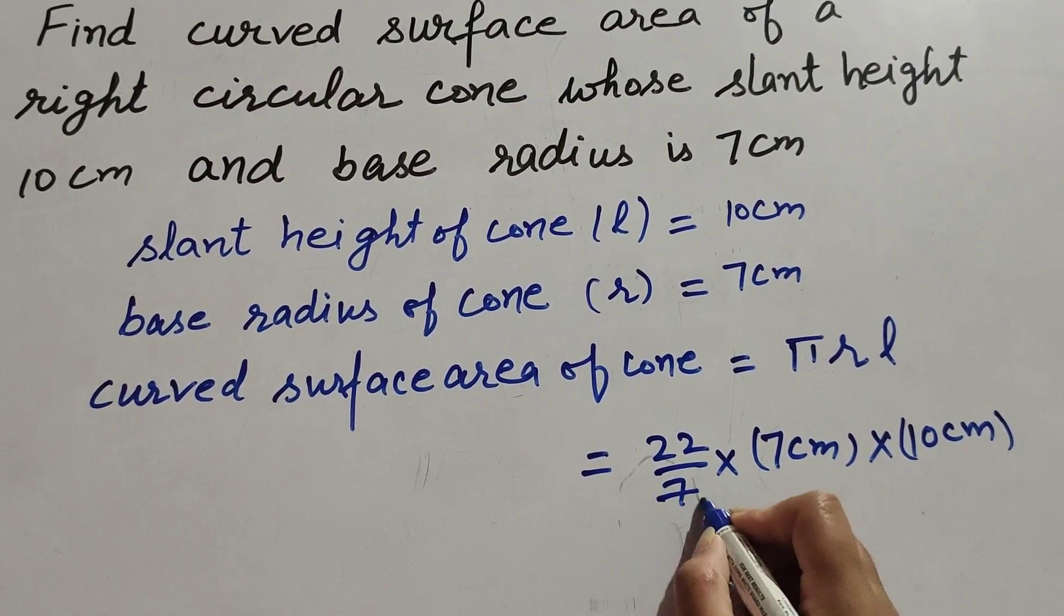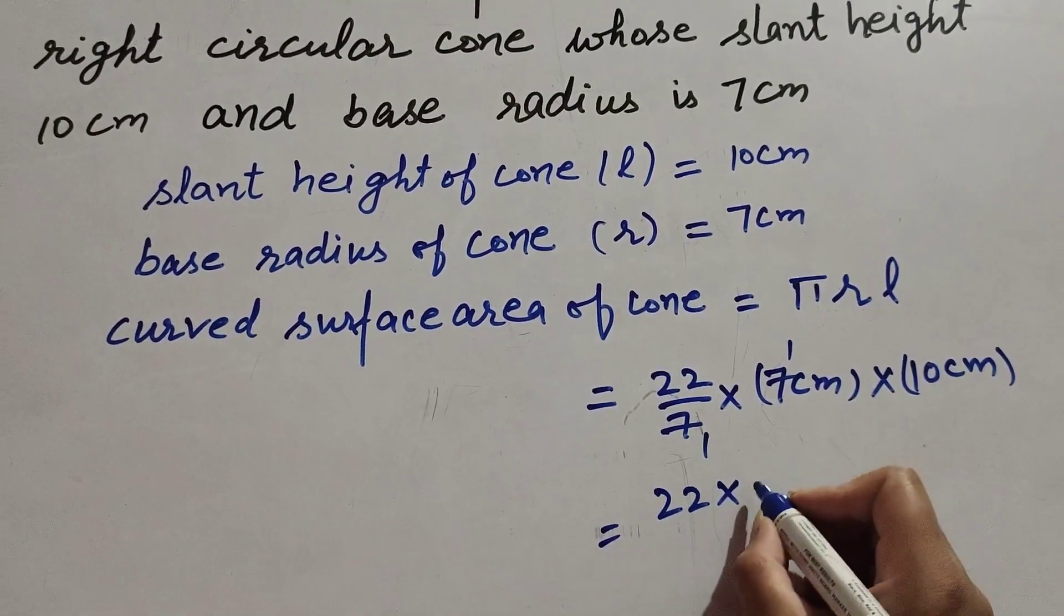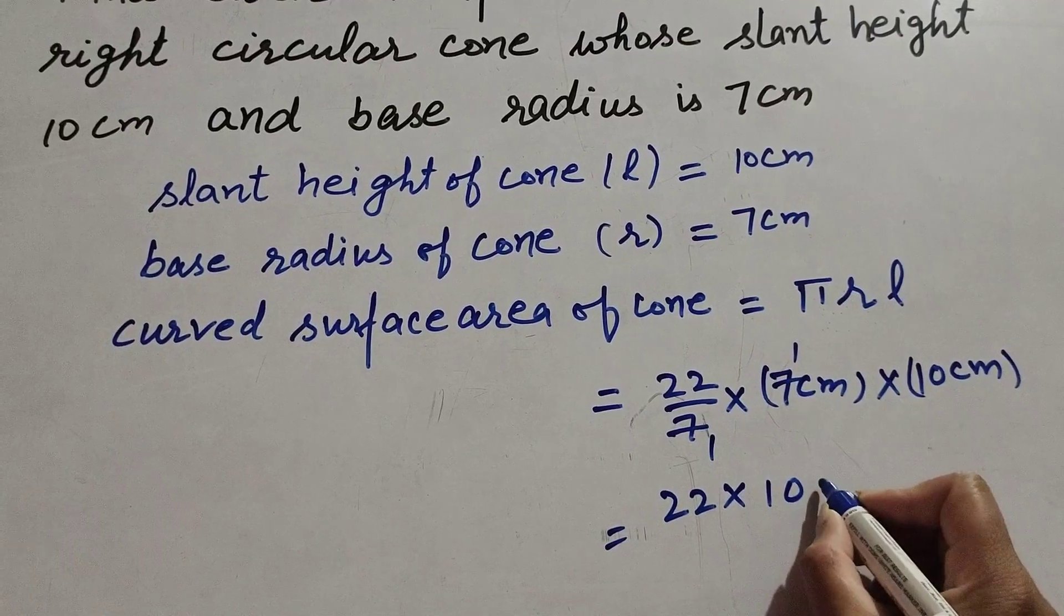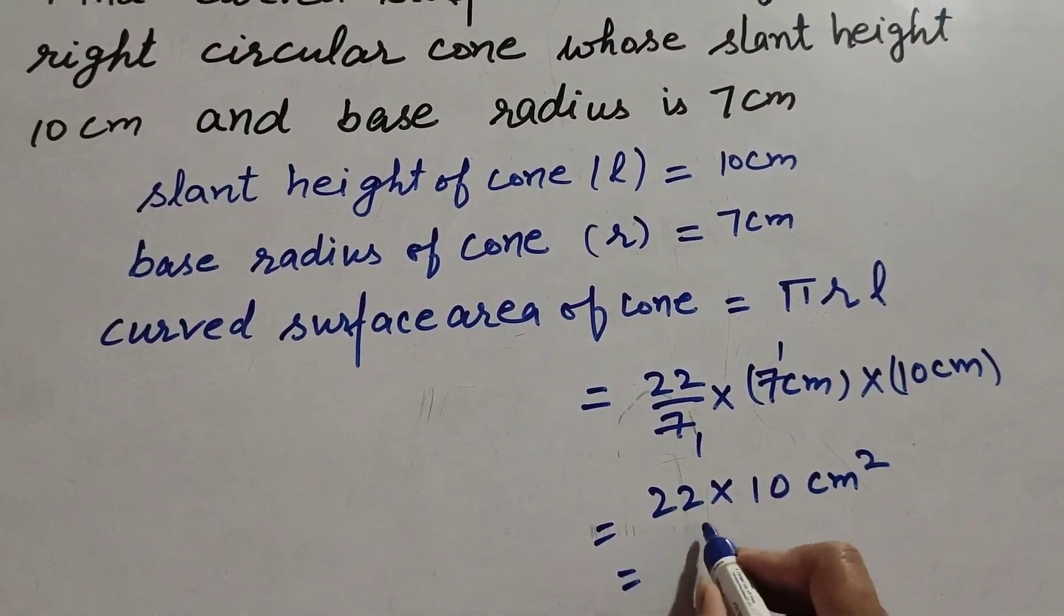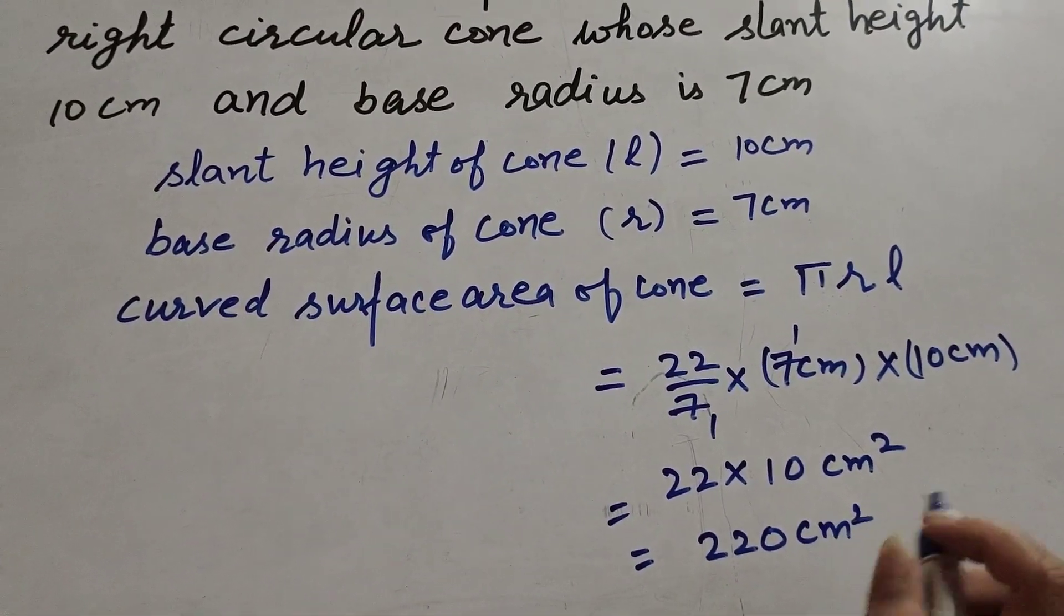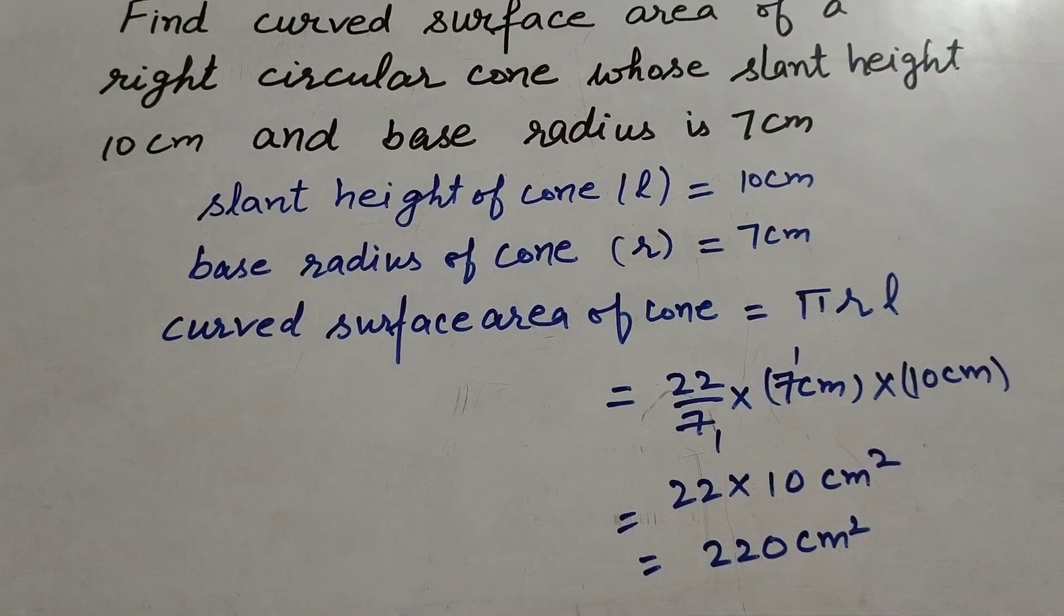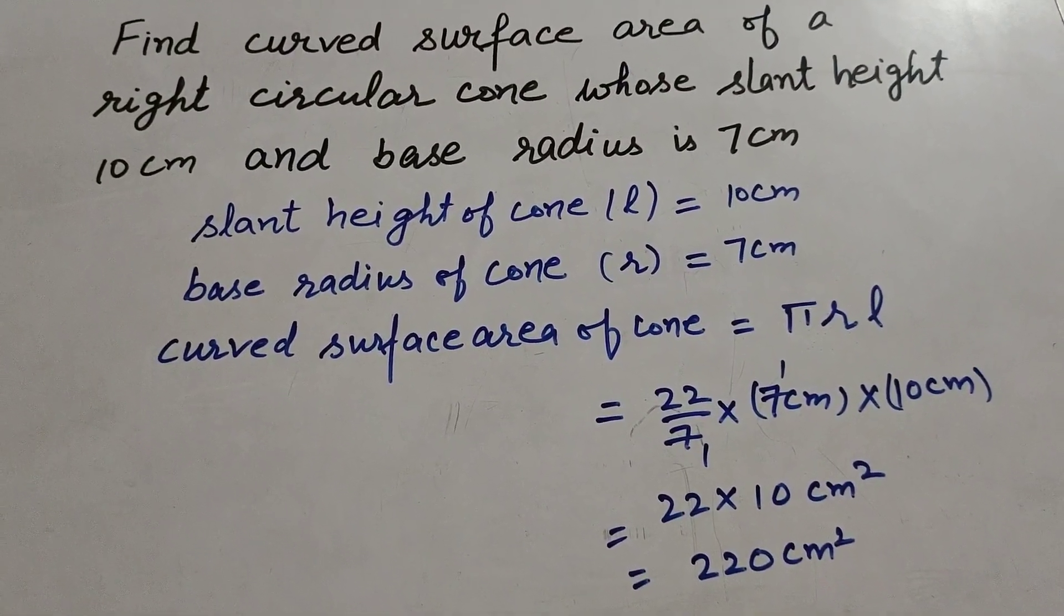22 times 10 cm squared. 22 times 10 equals 220 cm squared. So the curved surface area of the given right circular cone is equal to 220 cm squared.